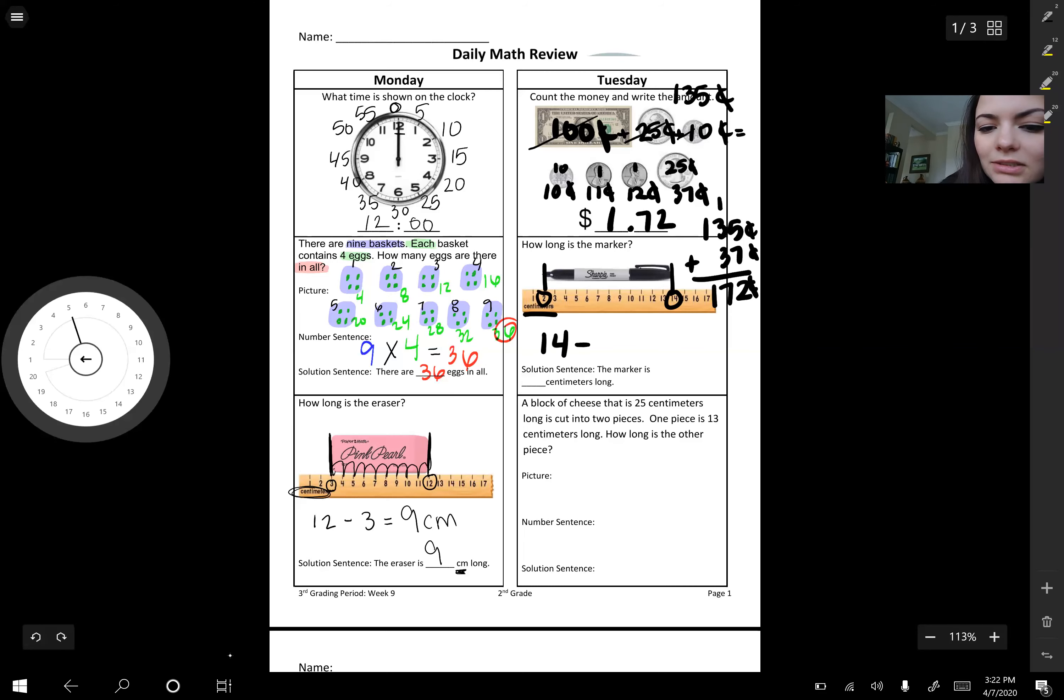So I'm going to do 14 minus two is one option or I can do my jumps and I'm going to do both because I'm going to do a really great job of showing my work just like you're going to do. So I'm going to start at two. I'm going to jump one, two, three, four, five, six, seven, eight, nine, ten, eleven, and twelve.